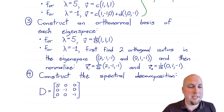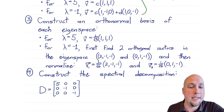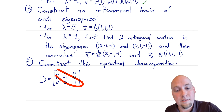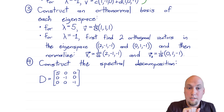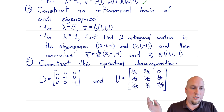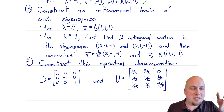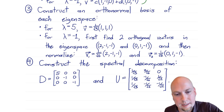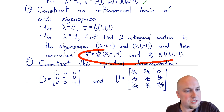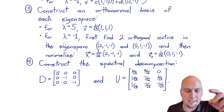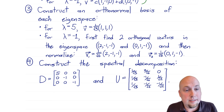Now you have an orthonormal basis of all eigenspaces — that's the only real new thing for spectral decomposition versus regular diagonalization. Construct D by placing eigenvalues along the diagonal; here I'm using 5, −1, −1, though the order doesn't matter. Construct U by placing the corresponding orthonormal eigenvectors as columns in the same order: first column (1/√3)[1,1,1] for eigenvalue 5, then (1/√6)[2,-1,-1] and (1/√2)[0,1,-1] for the two copies of −1. You can swap those last two columns and still have a valid spectral decomposition.